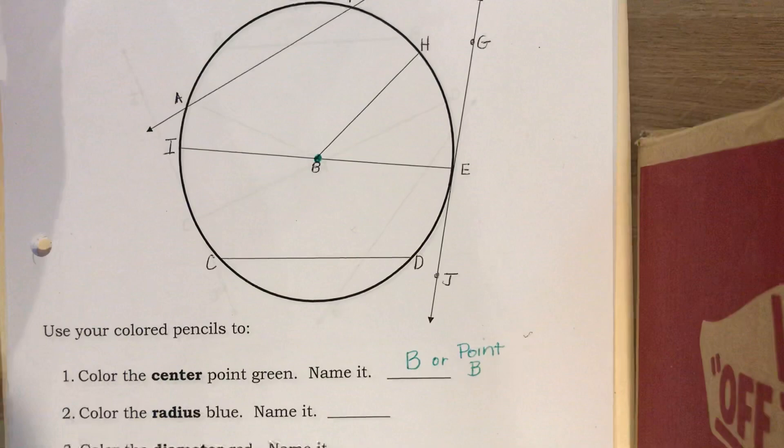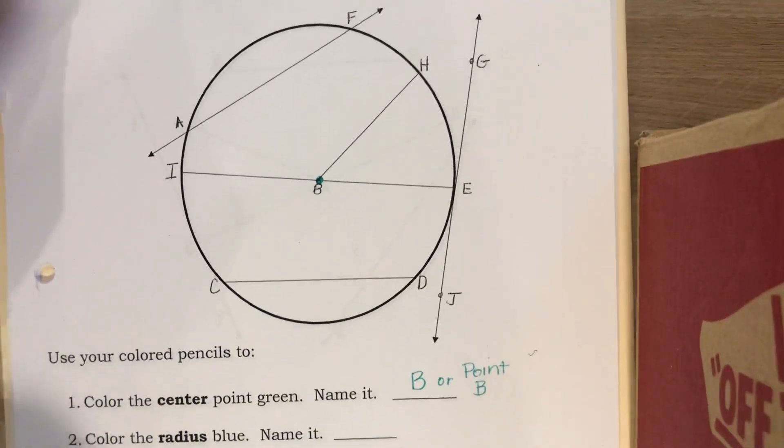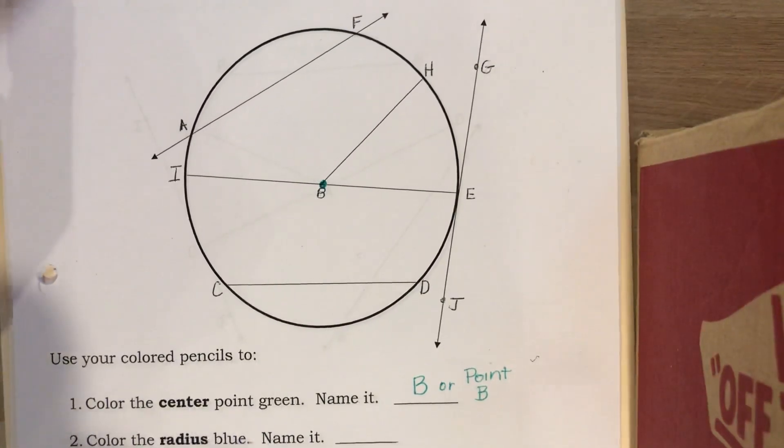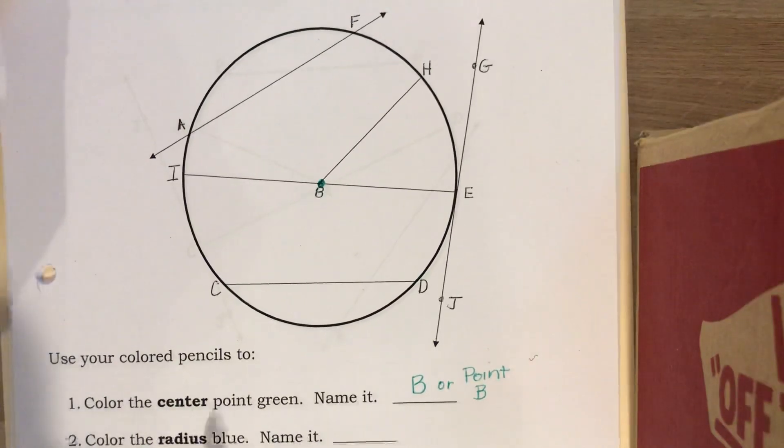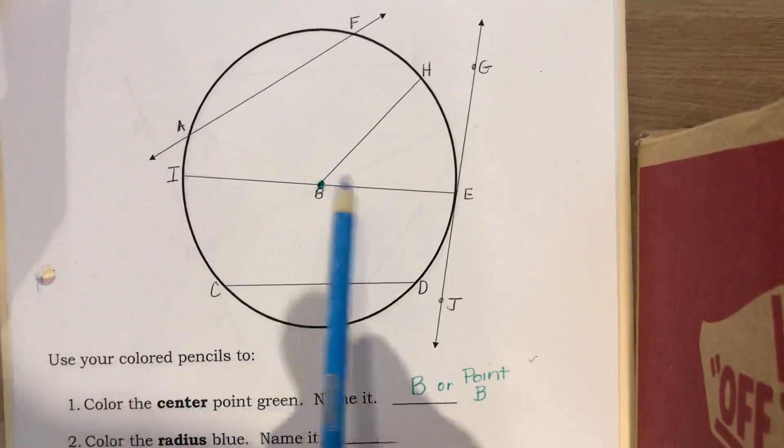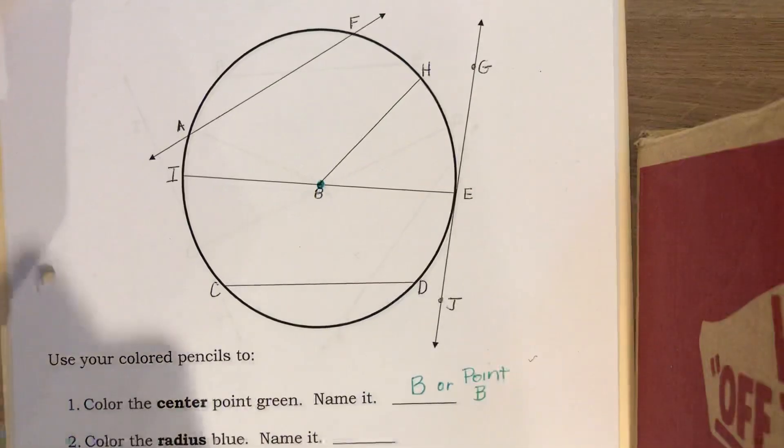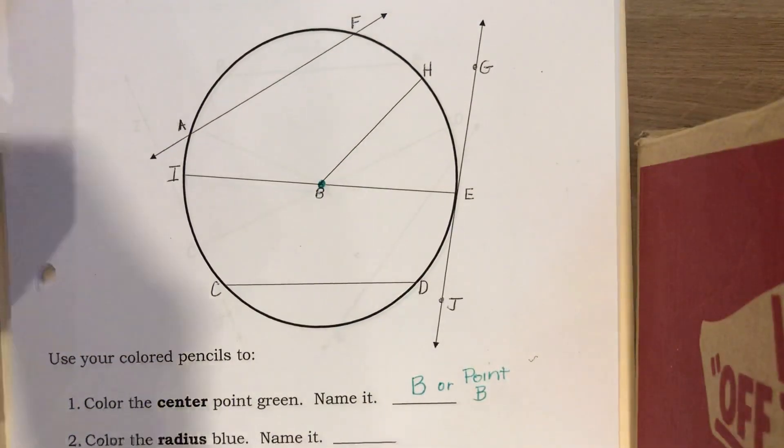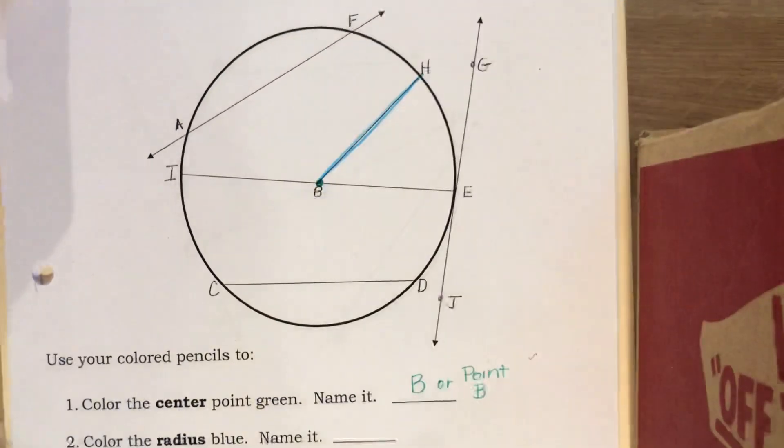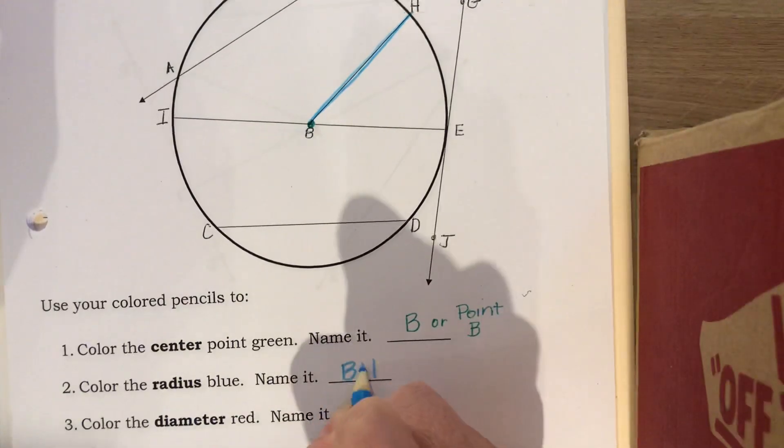Number two, color the radius blue. Now if you look at your picture, there are actually quite a few radii in the picture. Radii is the plural for radius. If I look at this picture, IB is a radius, BE is a radius, and BH is a radius. I'm just going to pick one and I'm going to go with BH. So I'm going to highlight that blue and I'm going to name it BH.